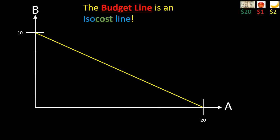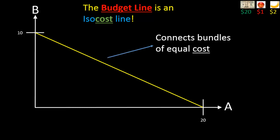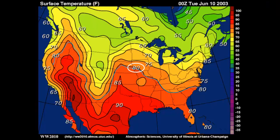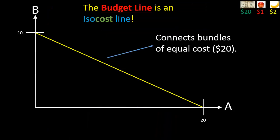That is to say, it is a line that connects bundles on our graph that are of equal cost. In the case of the budget line, it connects bundles that each cost $20 — that's Chris's income. So just like an isotherm was a line that connected points on the map of equal temperature, likewise the budget line is an isocost line. In particular, it is a line that connects bundles on our graph that cost an equal amount — namely the consumer's income — and in this case, that's $20.